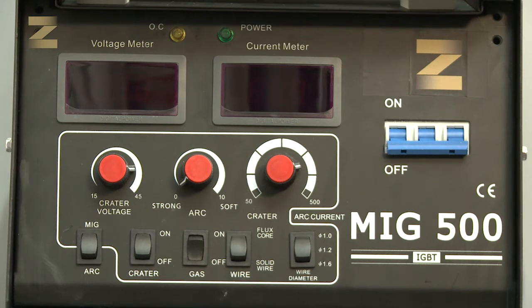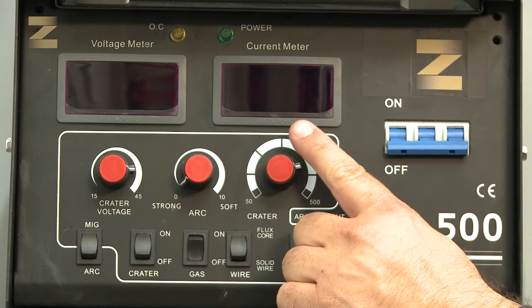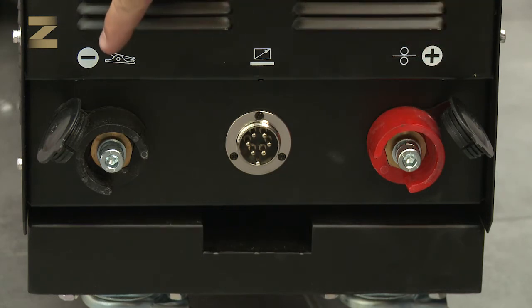The following devices are found above the switches and controls: voltmeter and ammeter. Three connectors are found at the bottom of the machine: a positive connector, negative connector, and connector for a command cable.